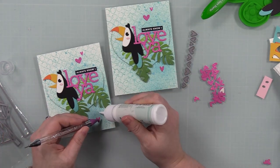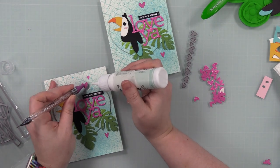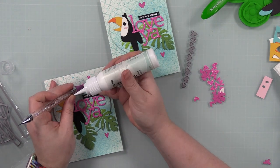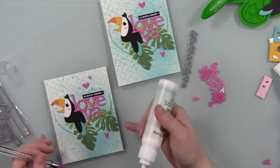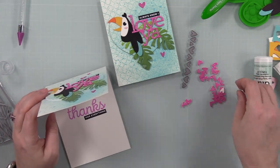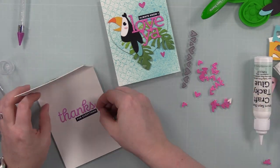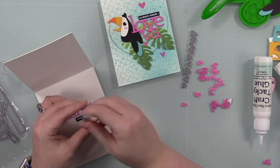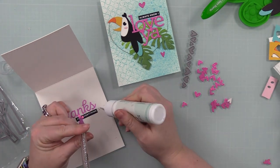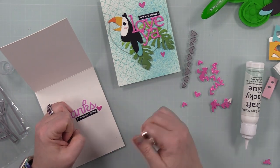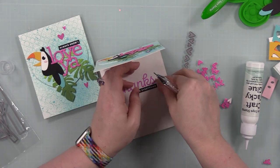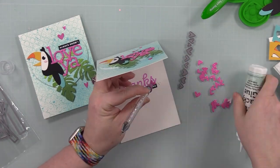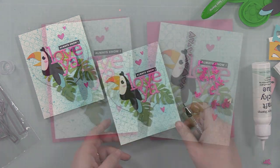I adhered those into place with craft tacky glue, then I decided to adhere a couple little sparkly hearts to the insides of the cards as well. Once those are adhered, I'm going to pair these with some doll pink envelopes, and that's going to finish off these cards.